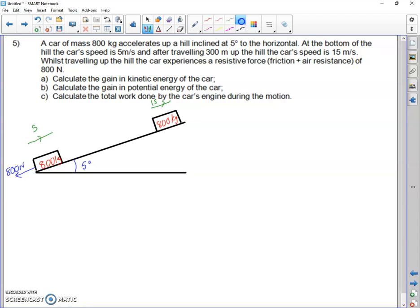The first question asks to calculate the gain in kinetic energy of the car. That's the kinetic energy at the end take away the kinetic energy it had at the start. So it's a half times 800 times v squared. At the end it was going 15 meters per second, take away a half times 800 times 5 squared - at the beginning it was going 5 meters per second. It's gained 80,000 joules of kinetic energy. That's part a, just looking at the kinetic energy and nothing else.